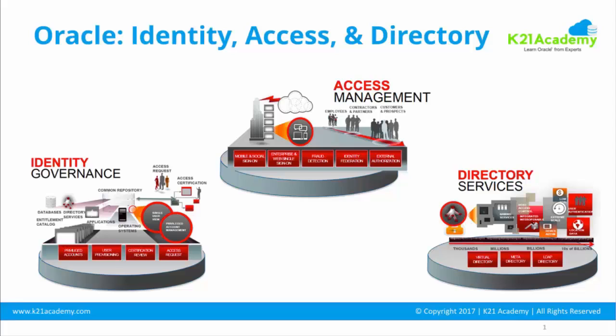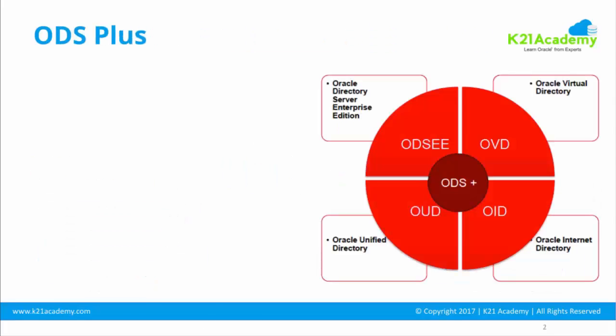Identity Governance is mainly for identity management — joiner, mover, leaver — covering provisioning and governance. Access Management provides authentication, authorization, and single sign-on. Directory Services is mainly for storing users, groups, and enterprise assets in an LDAP server.